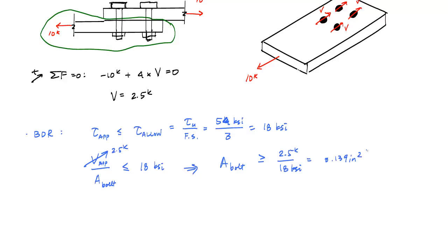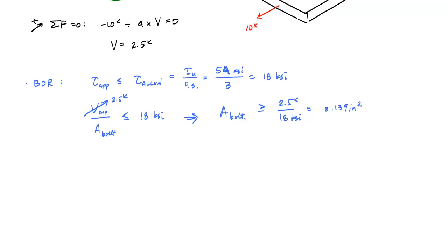2.5 divided by 18, which makes this 0.139 inches squared. And in order to turn this into a diameter selection, I just have to substitute the area of a bolt, the cross-sectional area of a bolt. I'll just say it's pi over 4 times the diameter of the bolt squared is greater than or equal to 0.139 inches squared. And if I solve for dB, I need the diameter of my bolt to be greater than or equal to 0.42 inches.